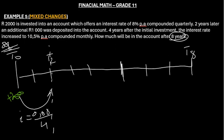So here they added another 1000 rand — another 1000 rand was deposited. Then again, two years later, an additional 1000 rand was deposited into the account. Two years later, we reach t8. Okay, we have already recorded that.